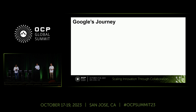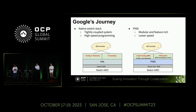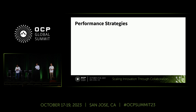Regarding Google's journey: on one side we have our native stack, which is custom built for our use cases — a tightly coupled system that is purpose-built, so it comes with high-speed route programming. Contrast that with our new stack PINS, which is P4 Integrated Network Switch. It comes with a wonderful, modular architecture and a breadth of features for the foreseeable future, but it comes with lower speed for route programming — and that is why we are here.